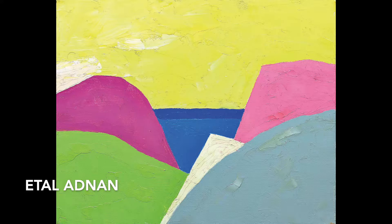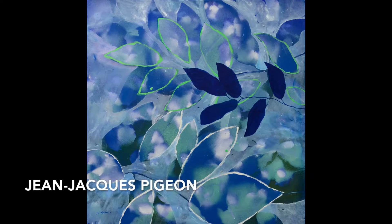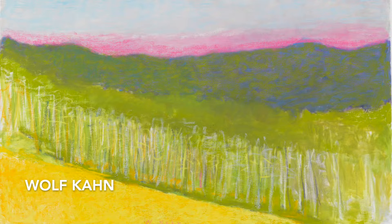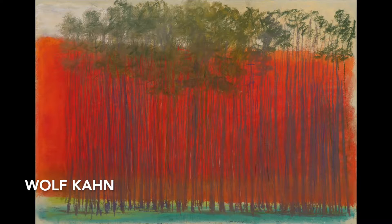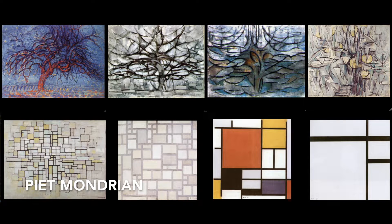American street artist Kaz appropriated the cartoon image of SpongeBob in an abstract manner. Lebanese-American artist Etel Adnan simplified landscapes into geometric shapes with striking color. Georgia O'Keeffe painted extreme close-ups of flowers. Contemporary French artist Jean-Jacques Pigeon is known for his layered paintings of floral motifs. German-American painter Wolf Kahn is known for his blend of realism and color-field approach in his landscape works. Piet Mondrian's style evolved geometrically over time.